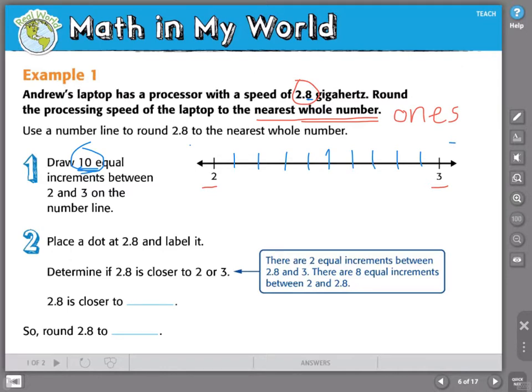That's an easy way for me. Now I can mark 2.8. Here is 2. This would be 2.1, 2.2, 2.3, 2.4, 2.5, 2.6, 2.7, 2.8. Now I have to determine is this place on the number line closer to 2 or closer to 3. 2.8 is definitely closer to 3. So I would round 2.8 to 3.